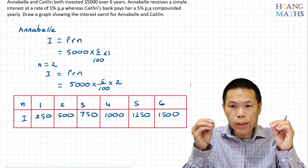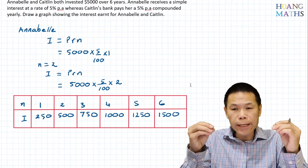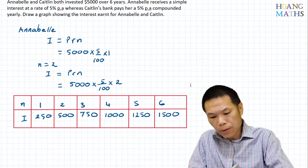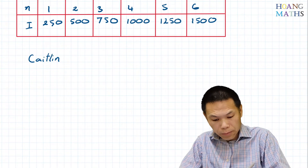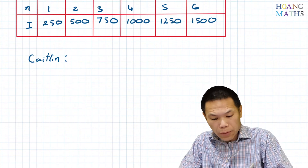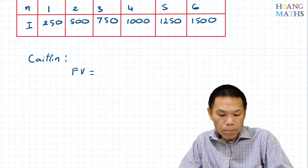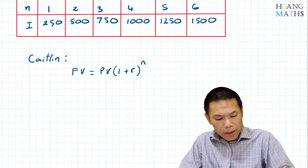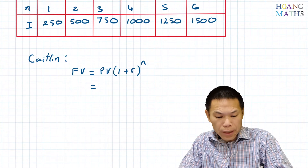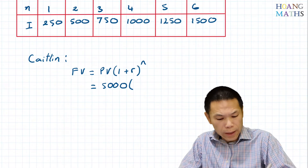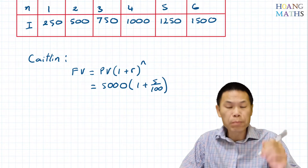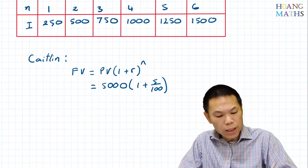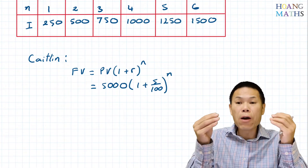Now let's work out the interest for Kaylin. Kaylin is receiving compound interest. The formula is: future value FV equals present value PV times (1 + R) to the power of N. The present value is $5,000, the interest rate is 5% per annum, so that's 1 plus 5 over 100, compounded annually, to the power of N. Let me draw a table with N and future value.